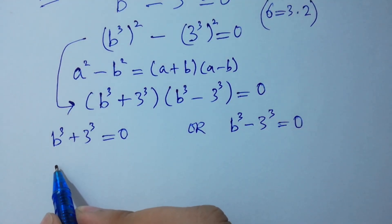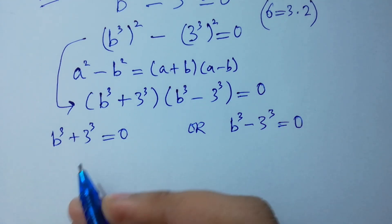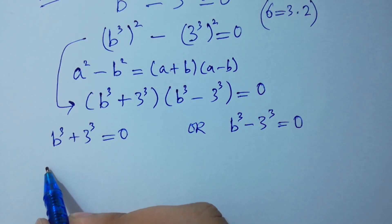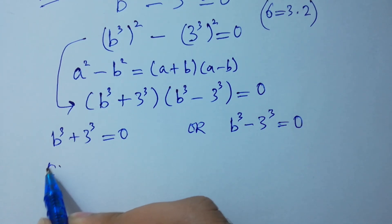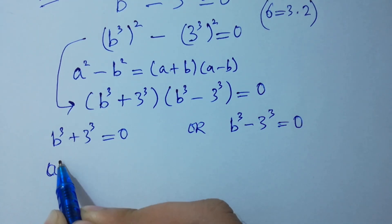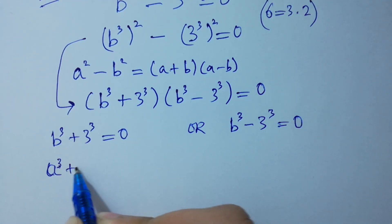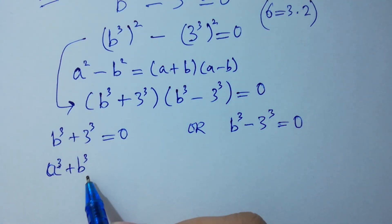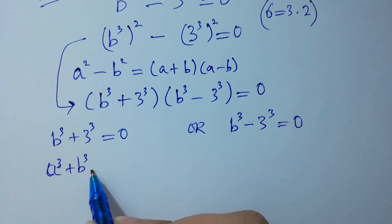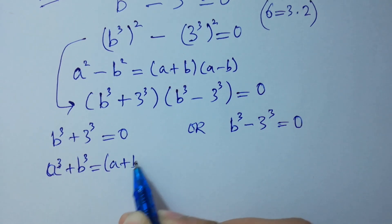For B³ plus 3³, we can apply the formula A³ plus B³ which equals (A plus B)(A² minus AB plus B²).